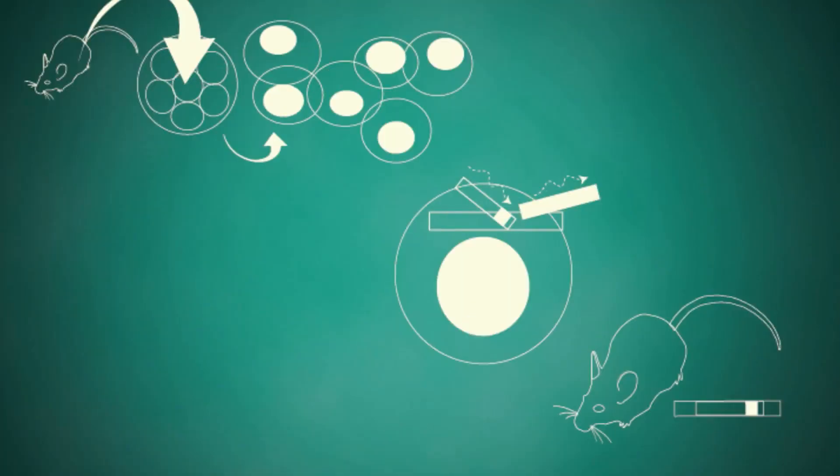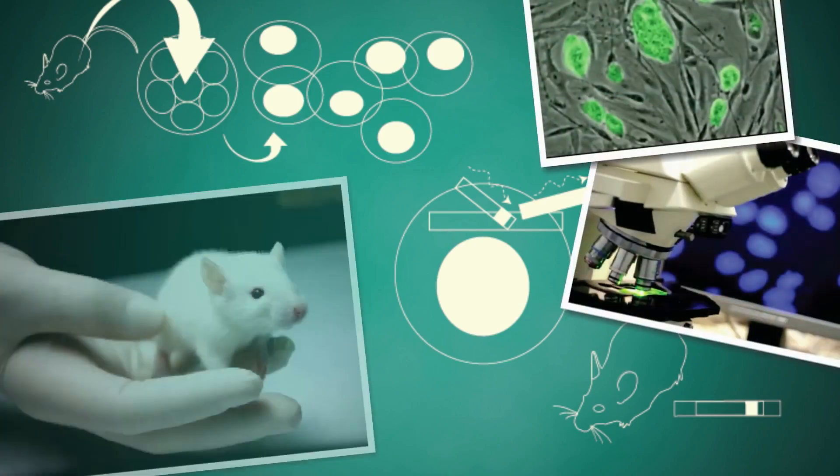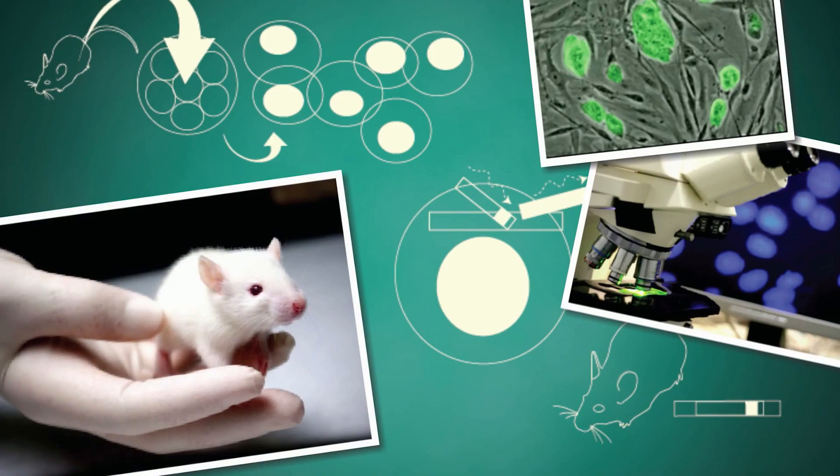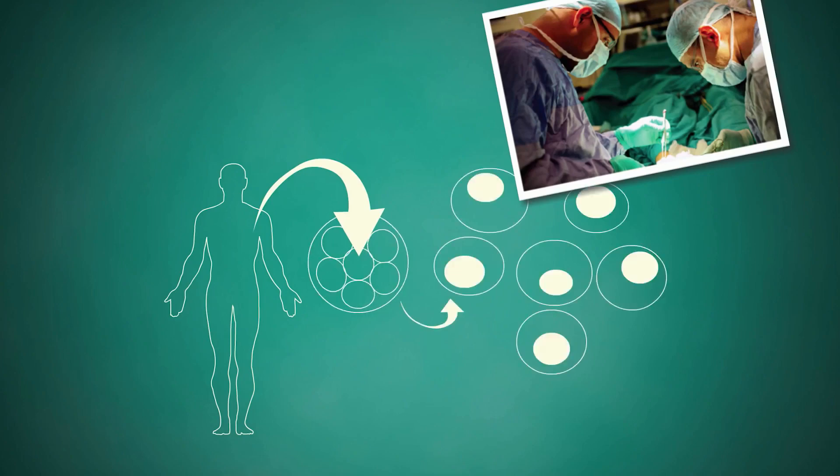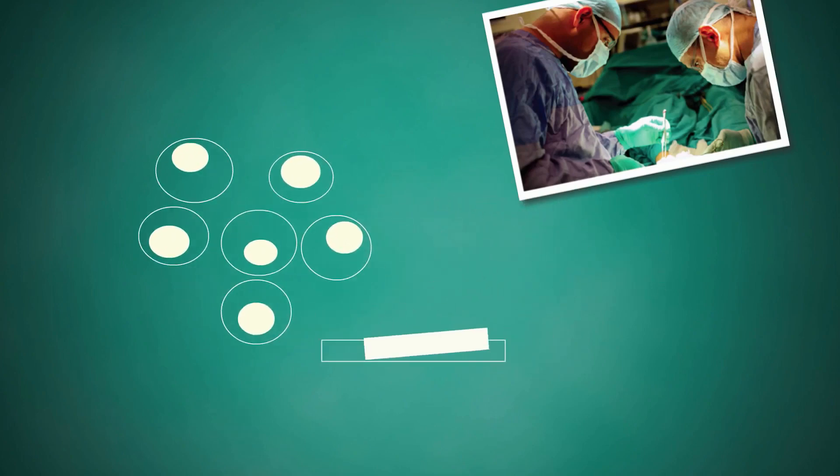Drawing on the gene-targeting technology used for making transgenic mice, scientists are developing a new kind of gene therapy. First, doctors isolate cells from a patient with a genetic disorder and create induced pluripotent stem cells. Next, the defective gene is replaced with a functional copy.